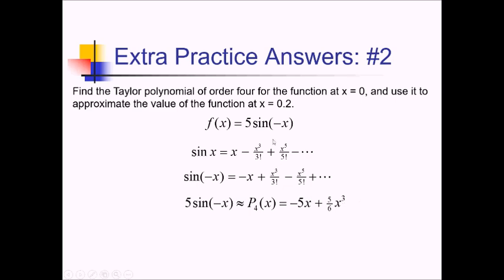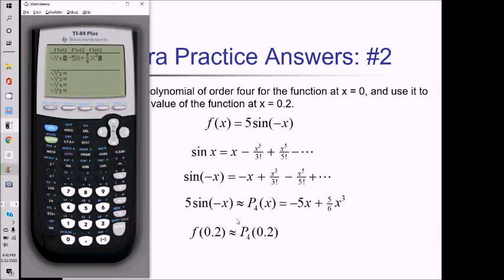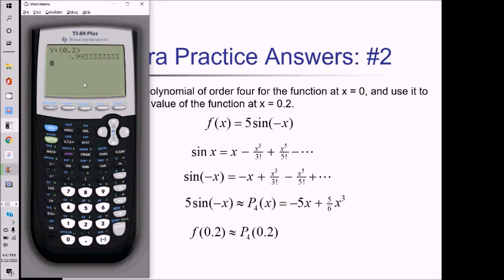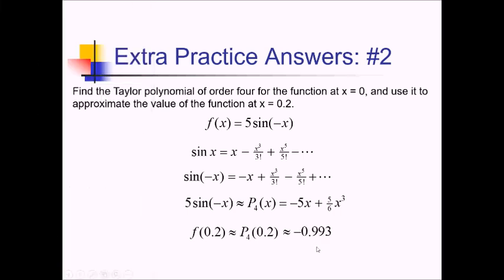To approximate f of 0.2, I'll plug 0.2 into p sub 4 of x using the calculator. I'll enter this polynomial in y1 exactly as written, then quit out, do alpha trace y1 of 0.2, and let the calculator handle all the plugging in. Pressing enter, that comes out to approximately negative 0.993.